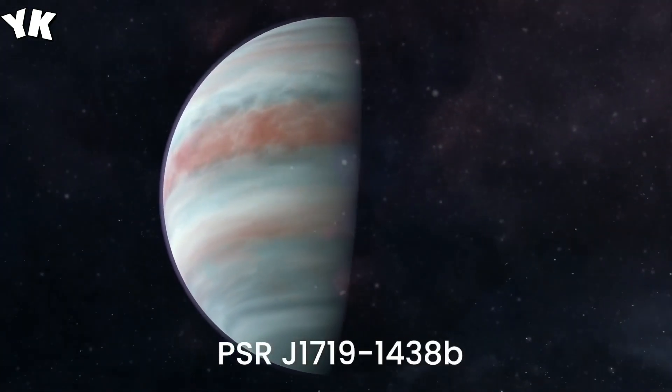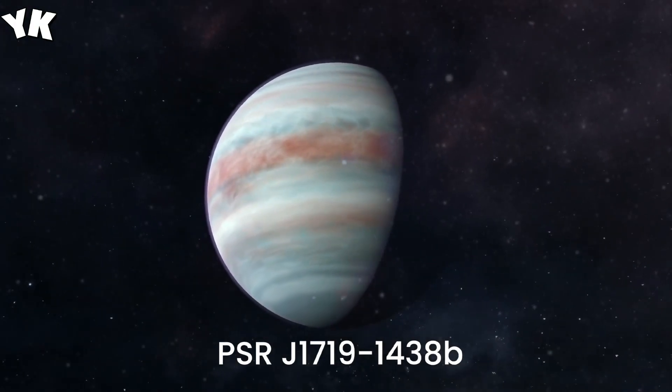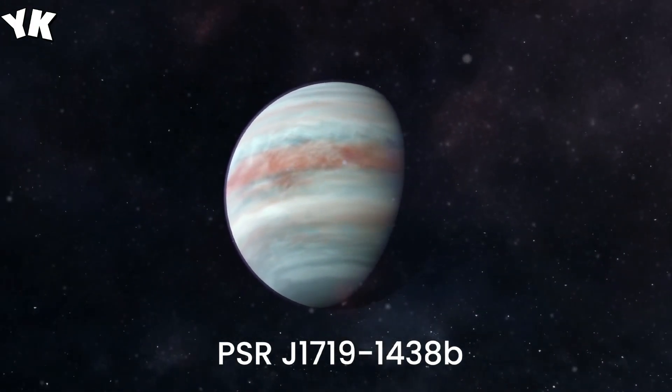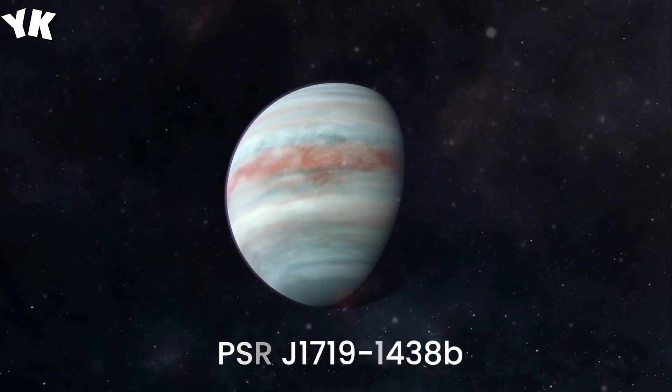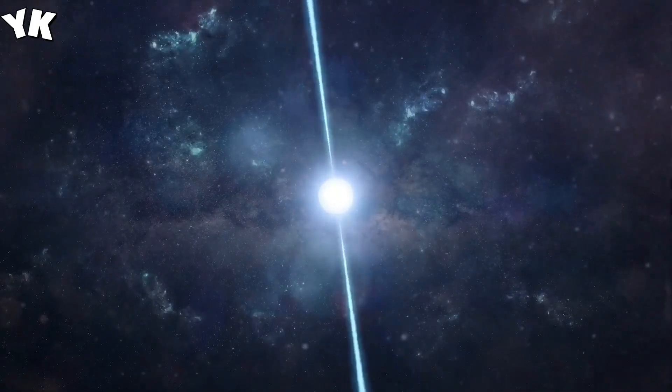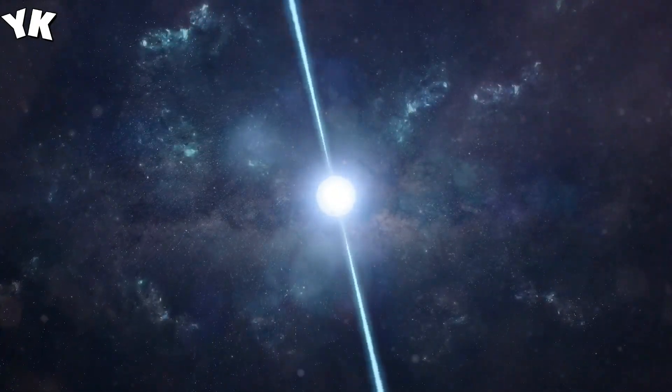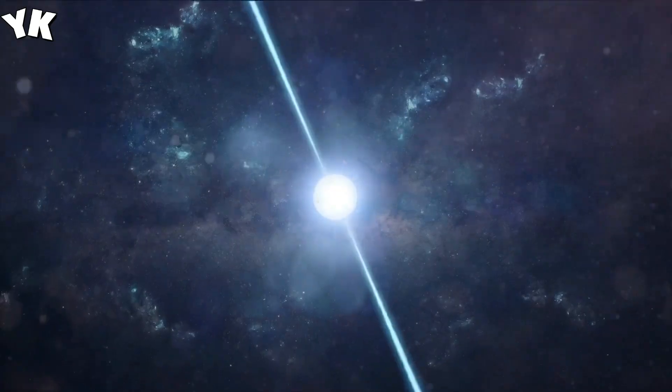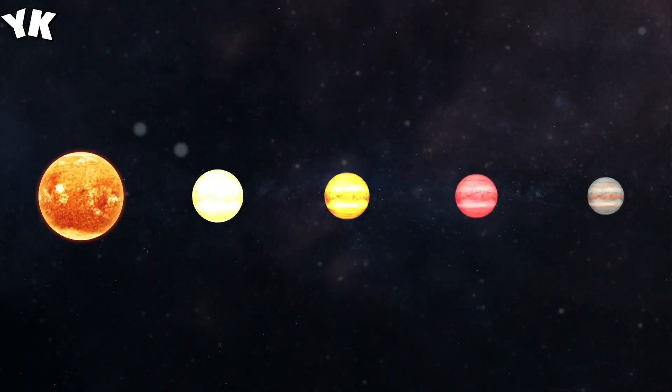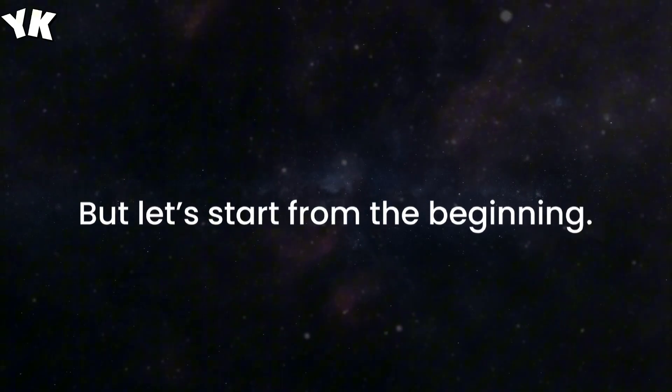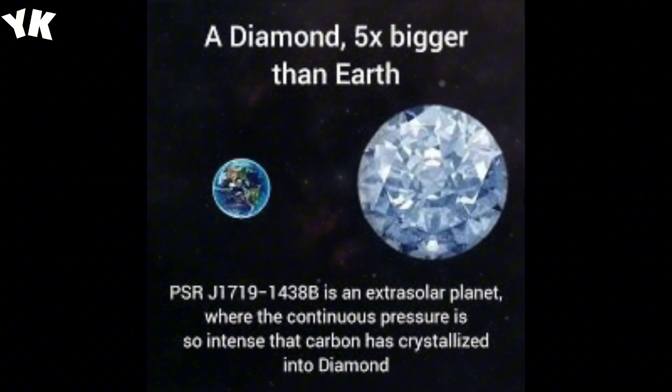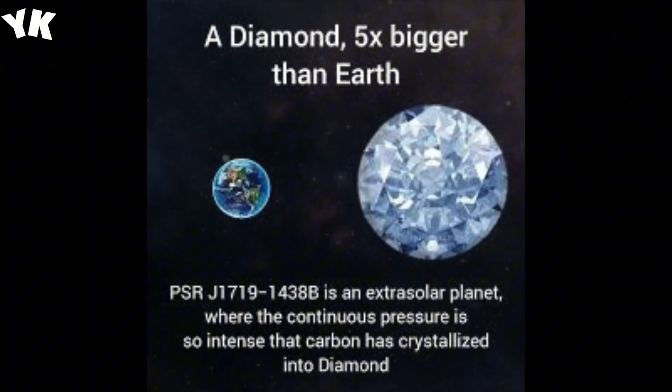PSR J1719-1438b, the diamond planet. Now, brace yourselves for a diamond in space. This exoplanet is 3,000 times larger than its host neutron star and was once a star itself. Imagine a world that's now a sparkling gem orbiting a tiny, dense neutron star.